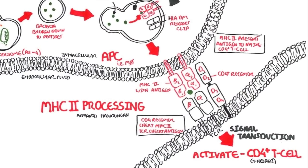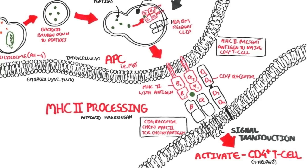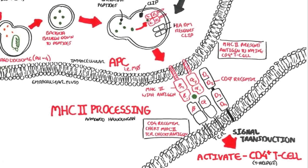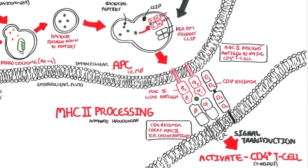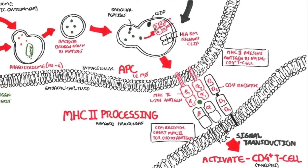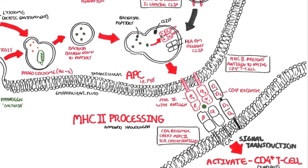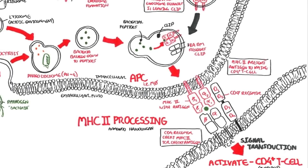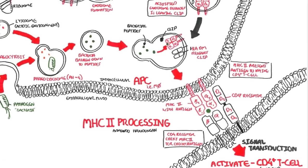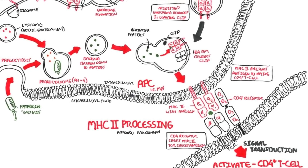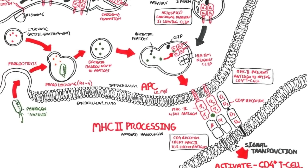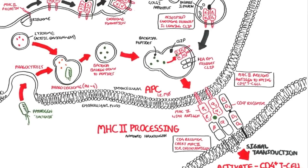This T helper cell can then promote the immune response by activating B cells, for example, or other things. Of course, it's not that simple, this activation process. In order to activate the CD4 T cell, other receptors such as B7 has to bind to another receptor, as well as there's release of cytokines. But that's too much detail. So I hope you understood the basics of this.